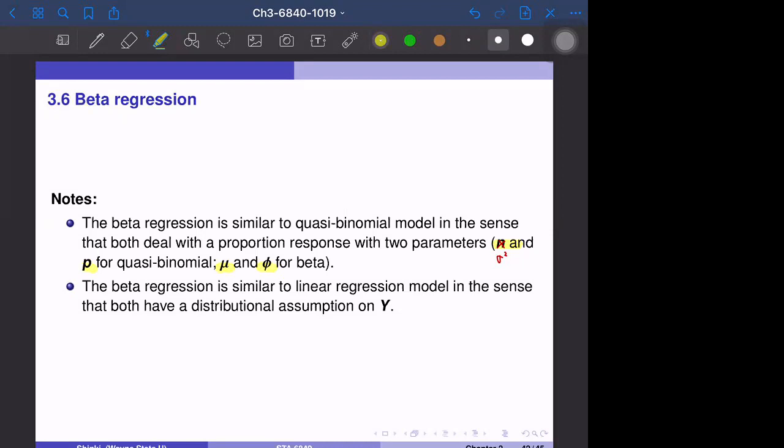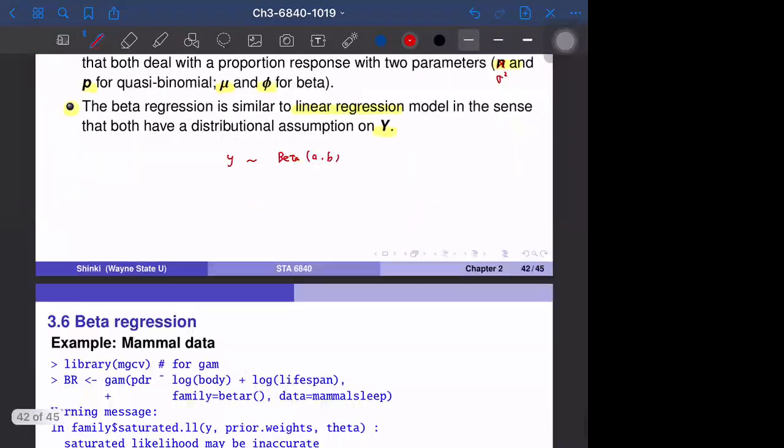Beta regression is actually similar to linear regression in the sense that both have distributional assumptions on y. Remember that we assume y follows the beta distribution with parameters a and b. In logistic or binomial regression models, we don't really have error terms - we take the expectation and that's it. But here, the beta regression model has a similar setting as linear regression in the sense that y has some error, and the error distribution is given by beta.